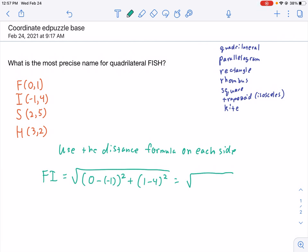So, that'll be 1 squared plus 3 squared. So, that's 1 plus 9, which is the square root of 10.